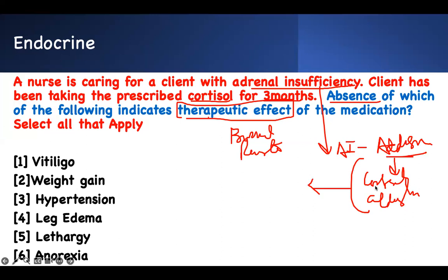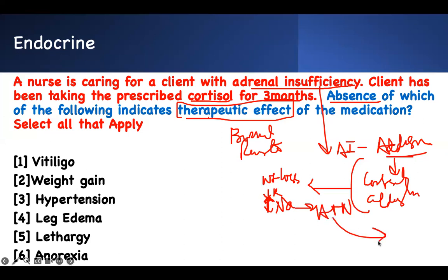What are the key features of Addison's disease? If you lack cortisol, you have weight loss. With lack of aldosterone, potassium is high and sodium is low. If the sodium is high and blood pressure is elevated, that is not consistent with Addison's. You pay attention to the things that are consistent with Addison's.